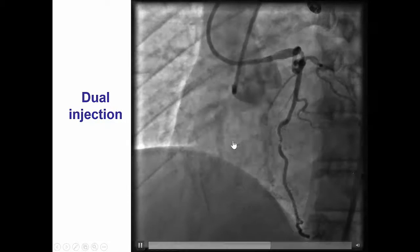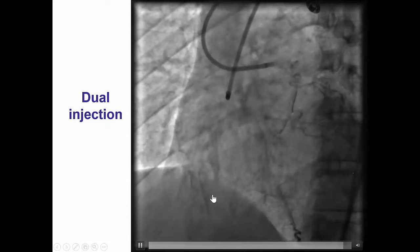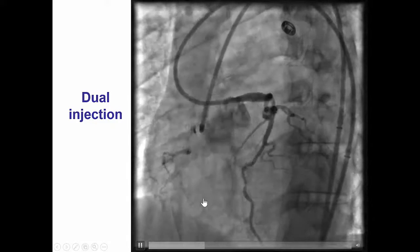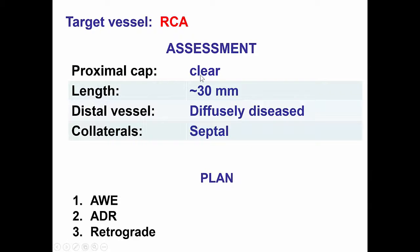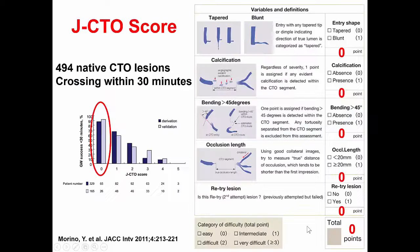On the dual injection, there is some competitive flow in the distal part of the RCA, but the occlusion appears to be short. In summary, the patient has a clear proximal cap, lesion length of about 30 millimeters, and a pretty small, diffusely diseased distal vessel due to a super-dominant wrap-around LAD and septal collaterals. Our plan was antegrade wire escalation; if subintimal crossing was achieved, re-entry; and retrograde as the third option.